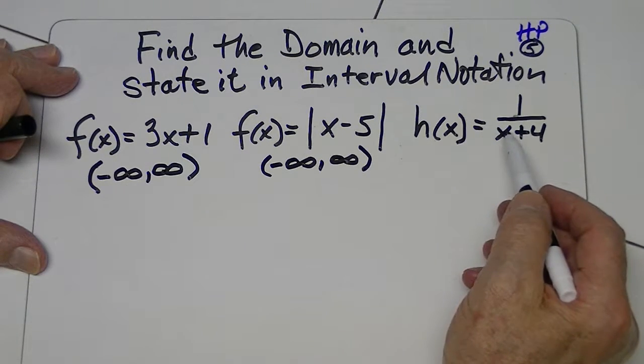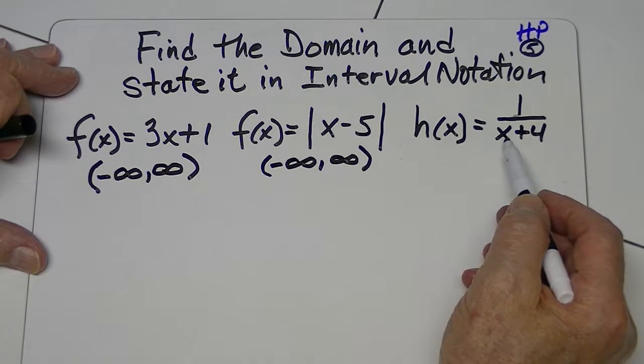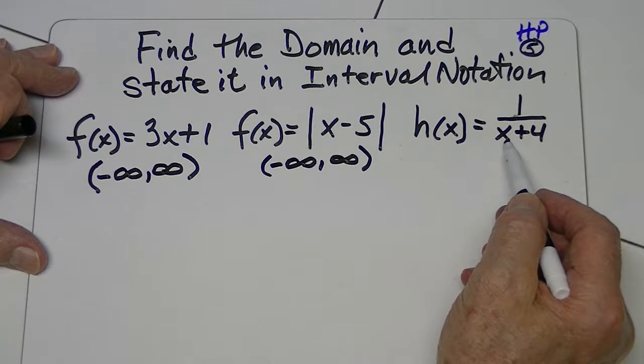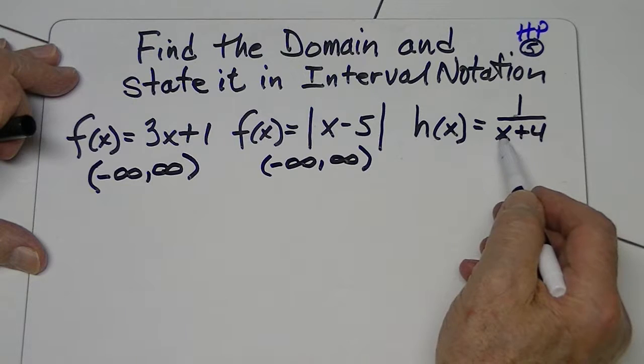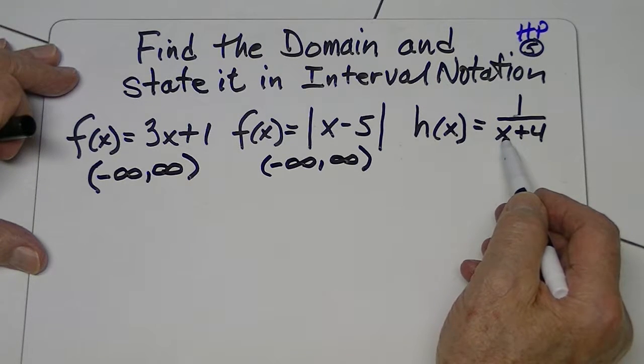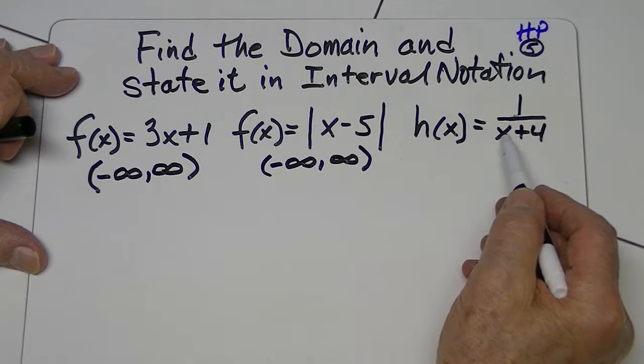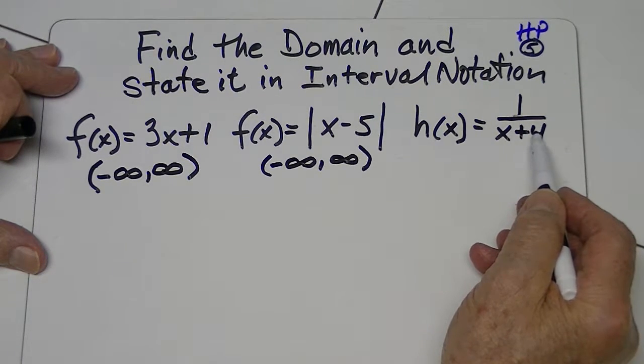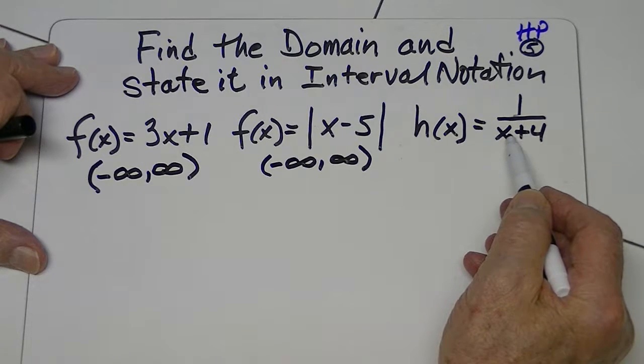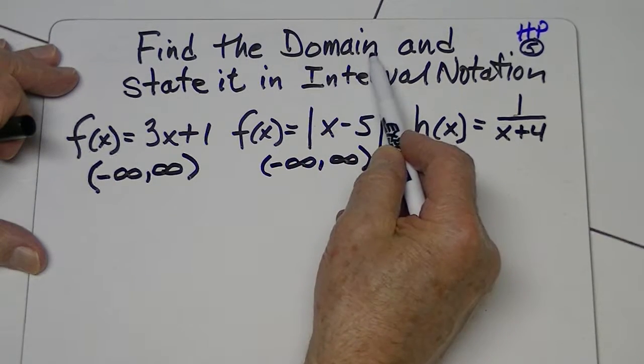Here, when we see that the variable is in the denominator, that's where we have to take particular notice. So in this case, if x has some value that makes this denominator a zero, then that value of x would not be in the domain.